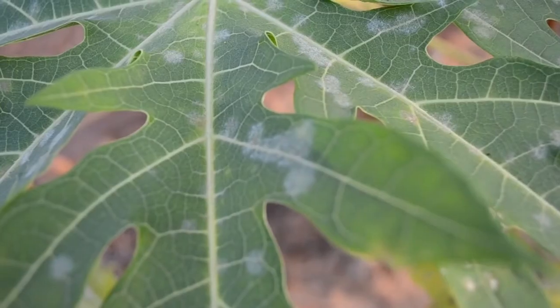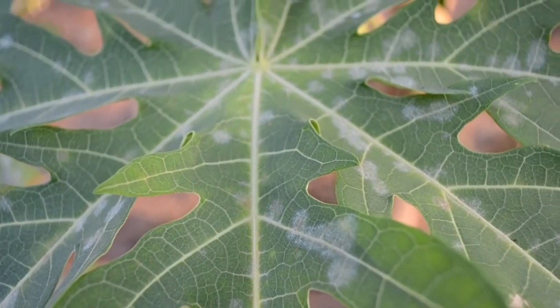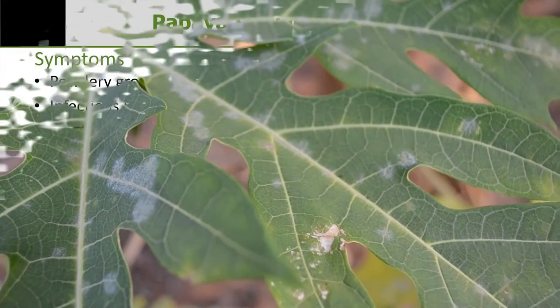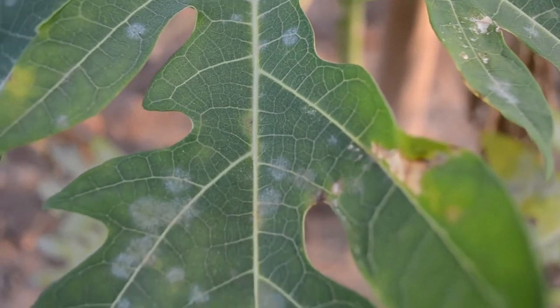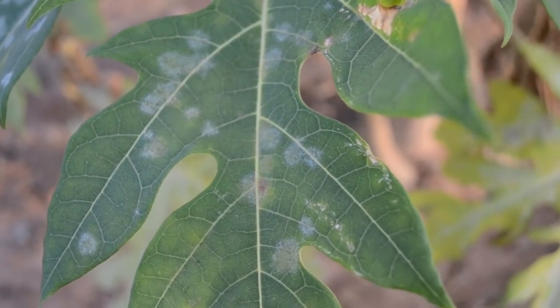This white powdery growth contains the mycelium of the fungus on which there will be development of conidiophores producing conidia. On the upper surface of the leaf, yellowish or greenish-yellow spots can be seen. Under favorable conditions, powdery growth is also produced on the upper surface. Under high humidity with cooler temperatures, the powdery growth on the lower surface is mostly concentrated near the veins or vein regions.